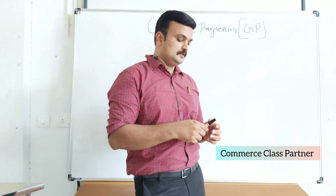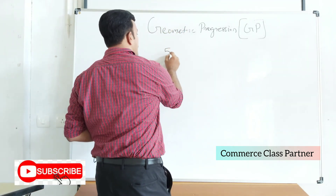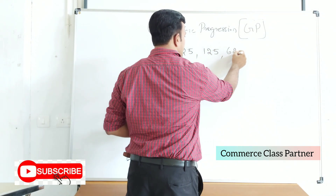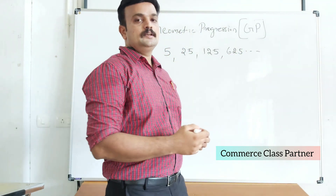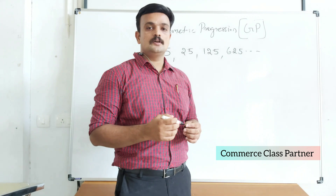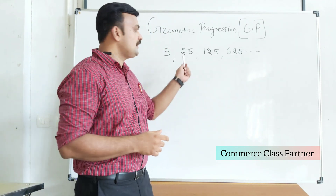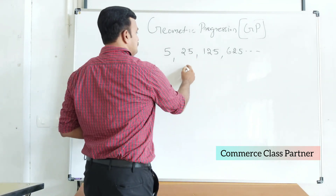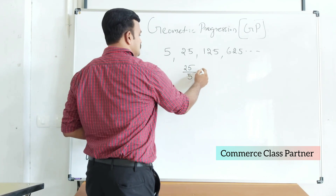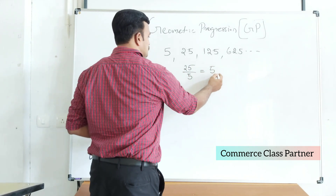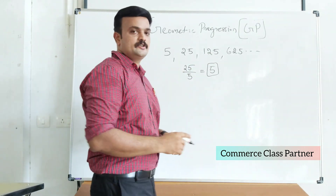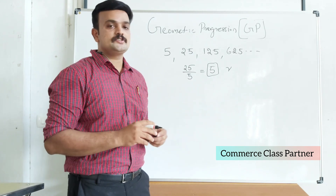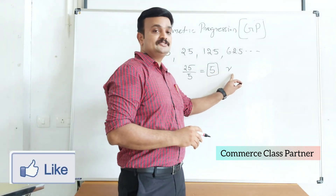I will give an example. Suppose the series 5, 25, 125, 625, and so on. This sequence is an example of Geometric Progression. There is a common ratio here. The common ratio can be found by dividing the second term by the preceding term. Here it is 5, so 5 is the common ratio, abbreviated as R.